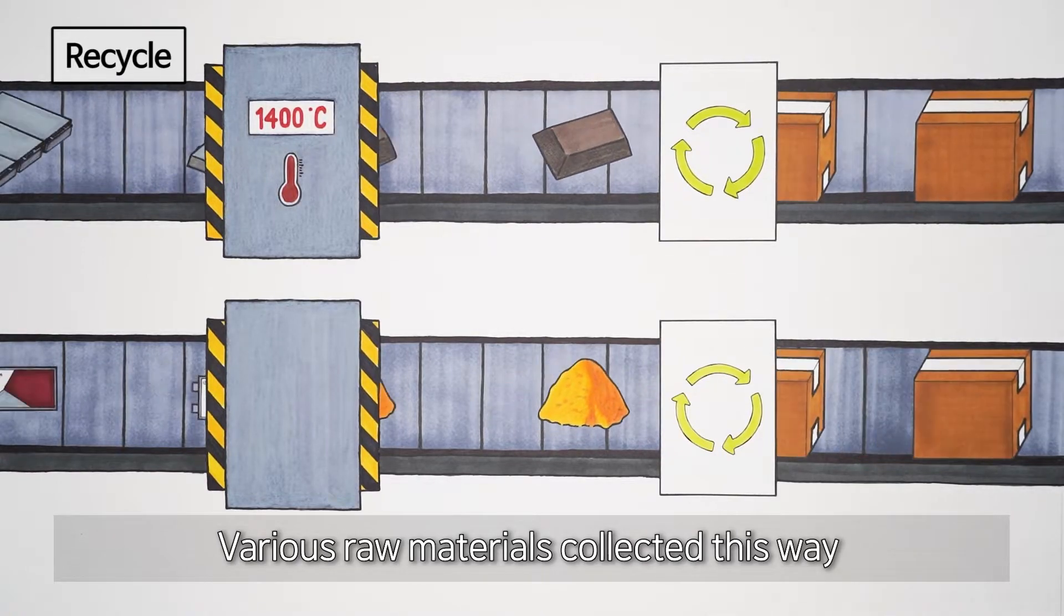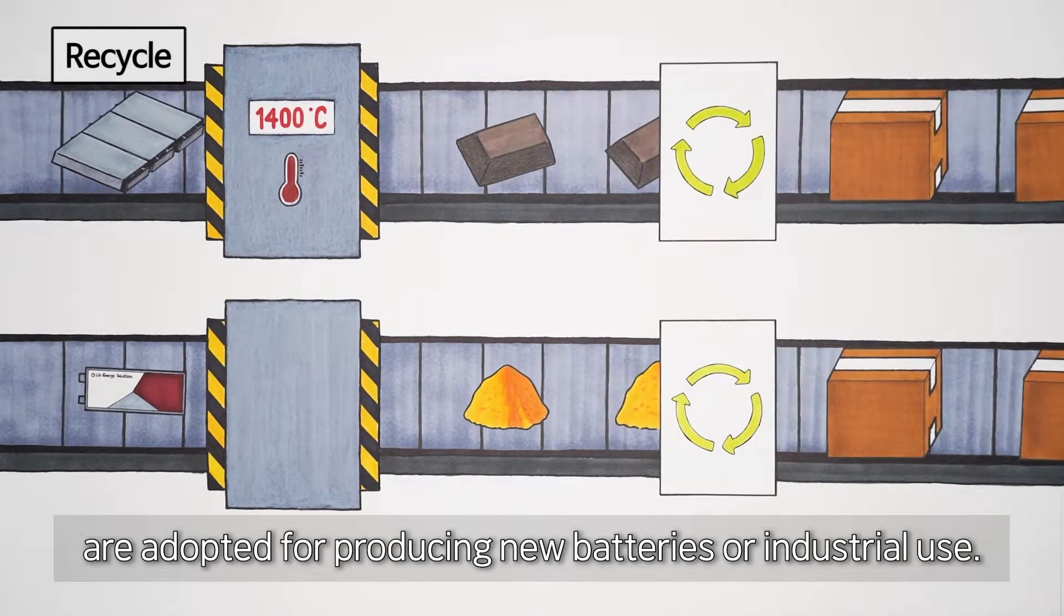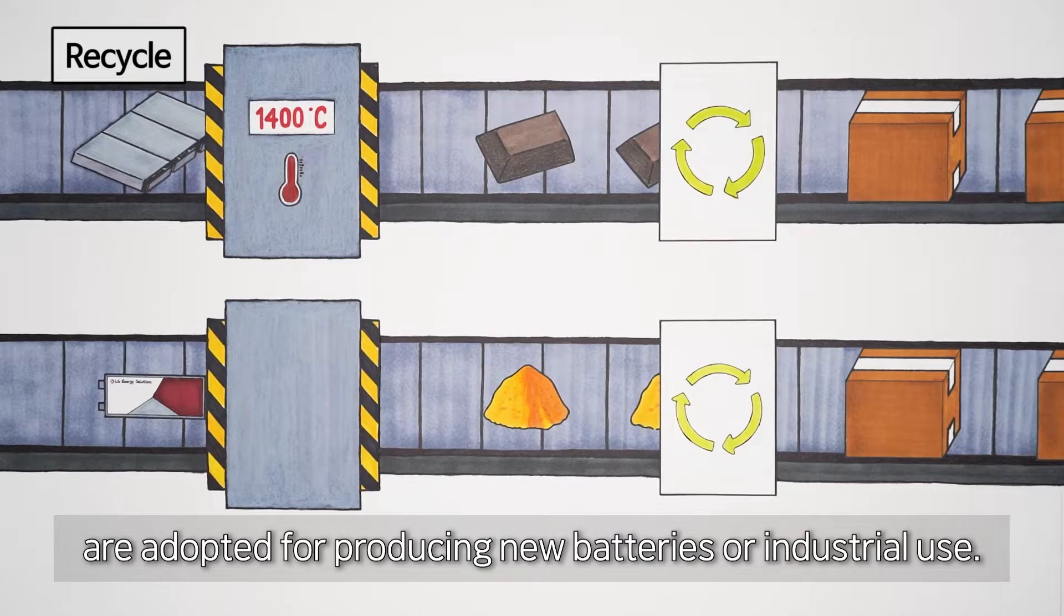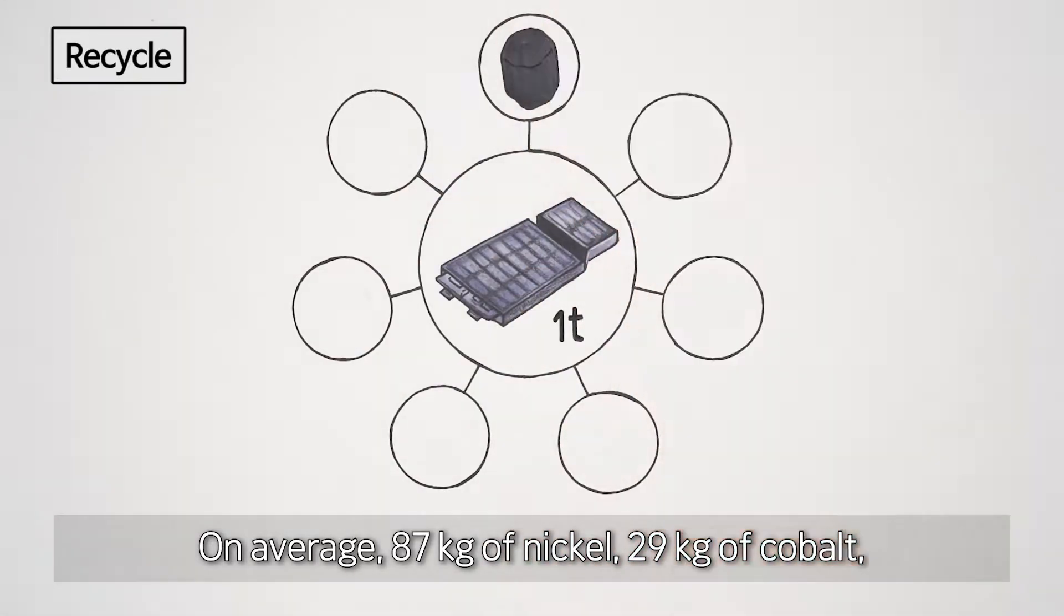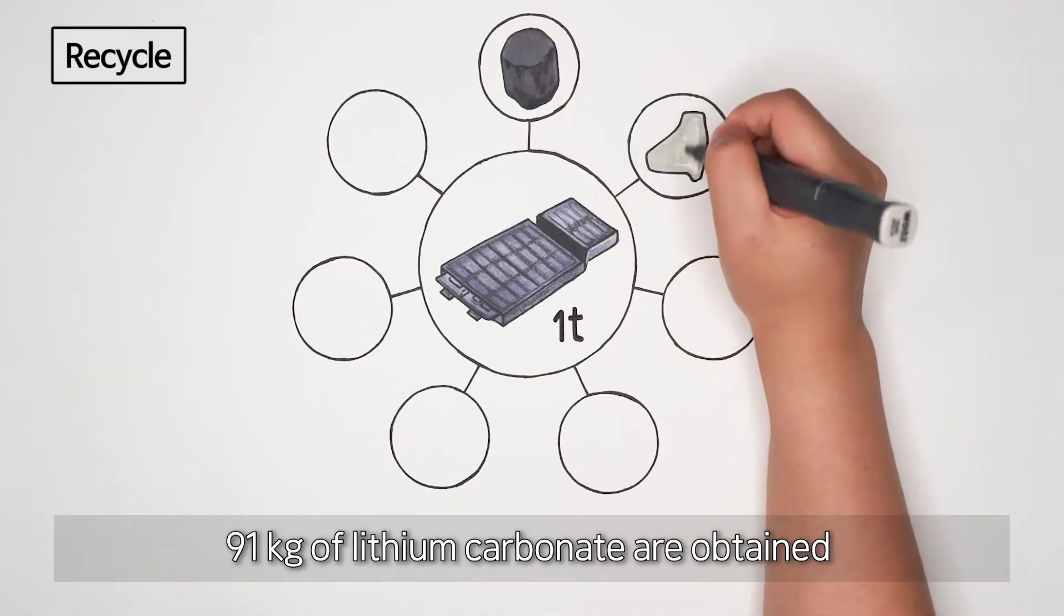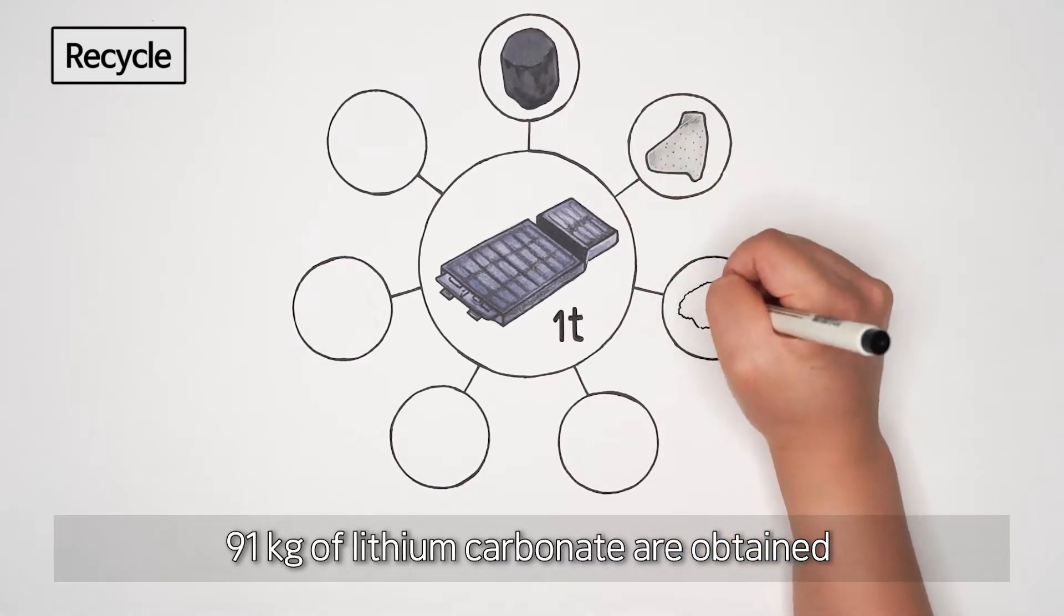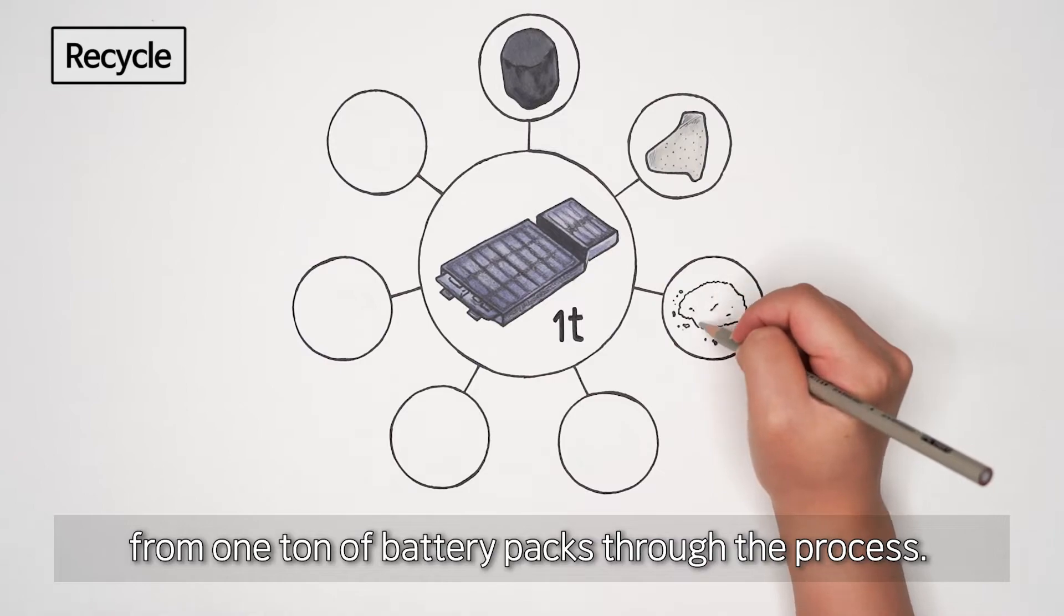Various raw materials collected this way are adopted for producing new batteries or industrial use. On average, 87 kg of nickel, 29 kg of cobalt, and 91 kg of lithium carbonate are obtained from 1 ton of battery packs through this process.